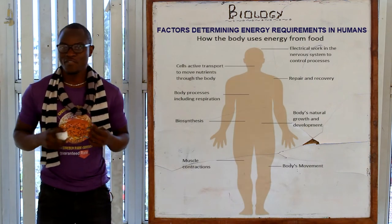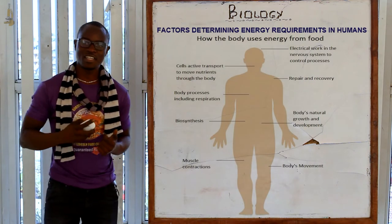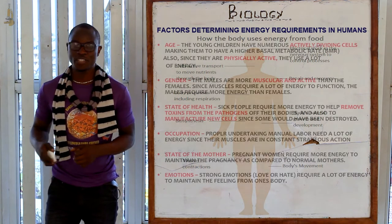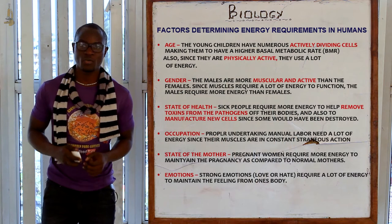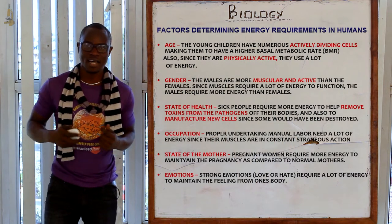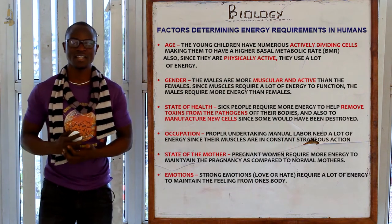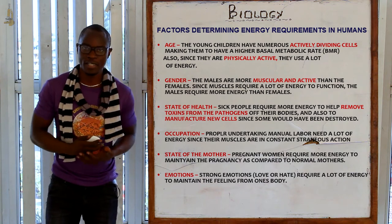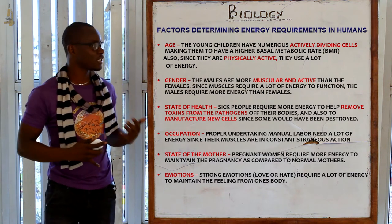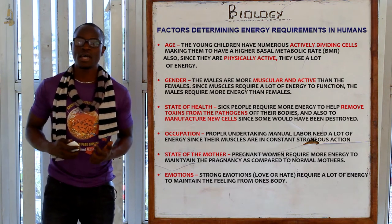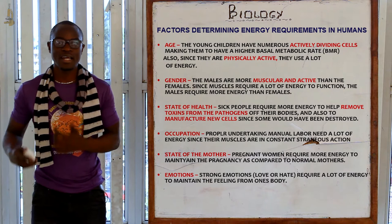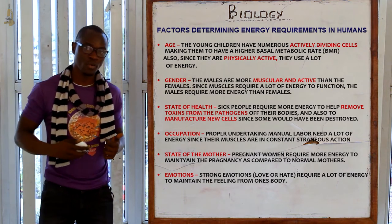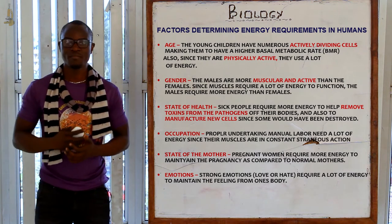Now let's look at the factors that determine the energy requirements in human beings. The first factor is age, whereby young children have very many active dividing cells, hence they have a very high basic metabolic rate, which is called the BMR. They are also physically active, whereby they require a lot of energy to carry out these activities.